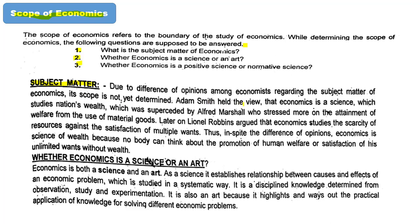Adam Smith held the view that economics is a science which studies a nation's wealth. This was superseded by Alfred Marshall, who placed more emphasis on the attainment of welfare from the use of material goods. Later on, Lionel Robbins argued that economics studies the scarcity of resources against the satisfaction of multiple wants.